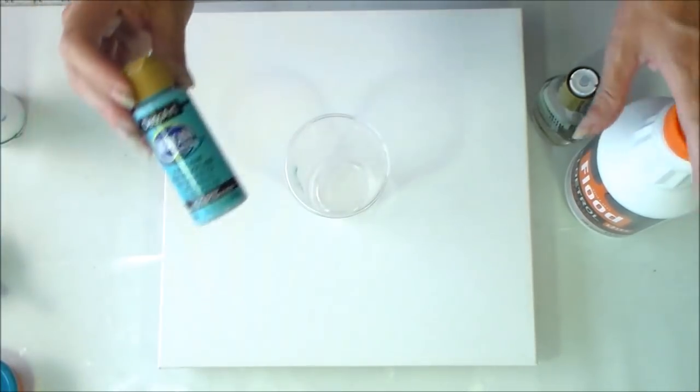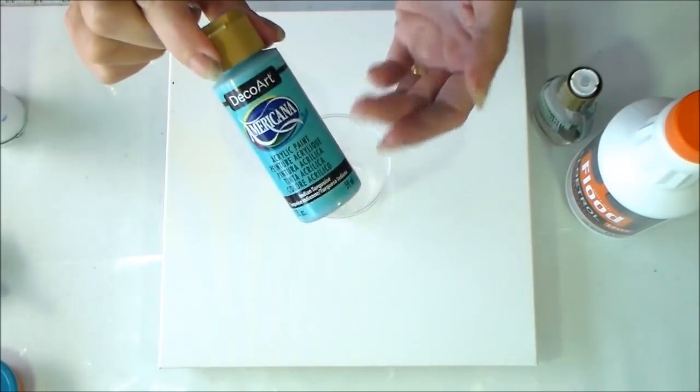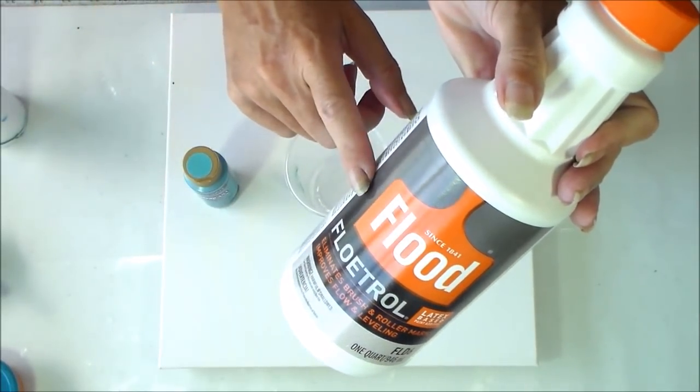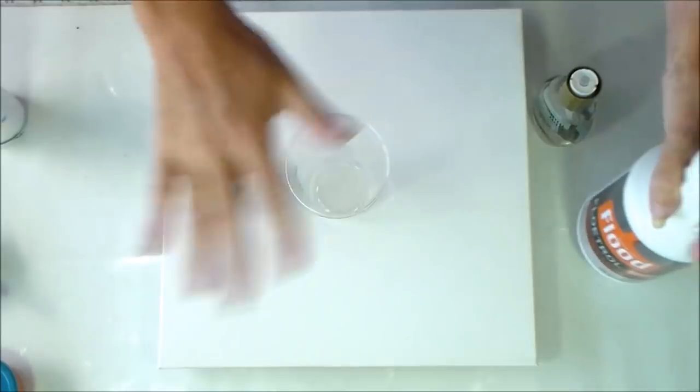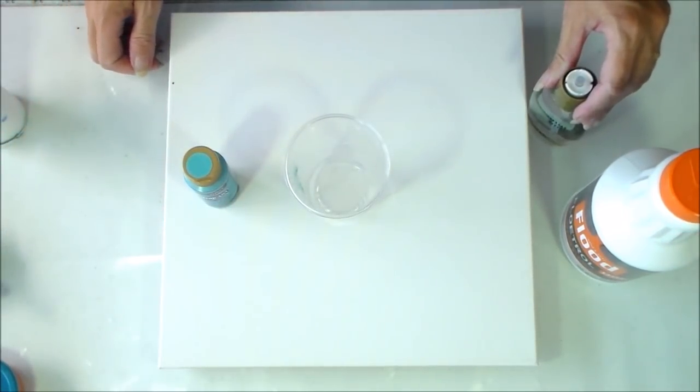So in terms of my recipe, I used my scale today and I used 15 grams of the paint and added 10 grams of the Floetrol as my pouring medium. And that pretty much worked across the board for all of the paints. I didn't have to add any kind of water or anything.